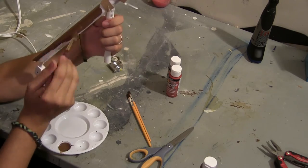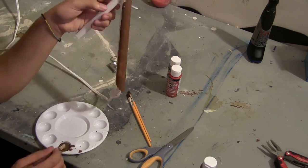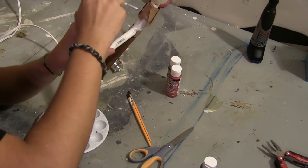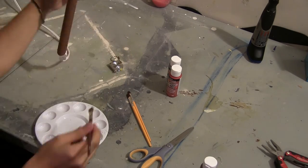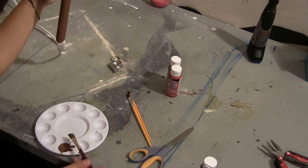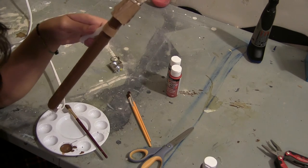And now we're painting the entire PVC part brown so it looks like wood. So it should look like this.